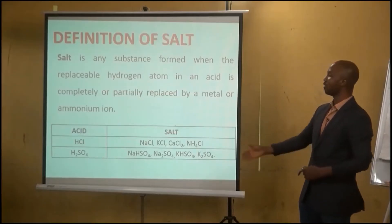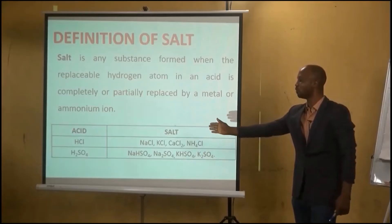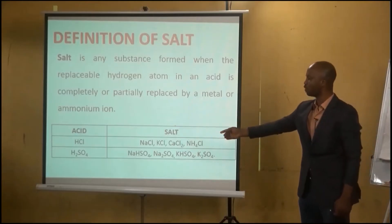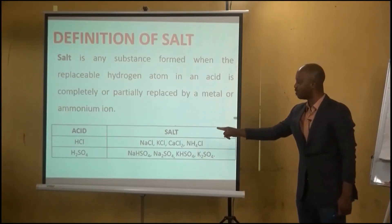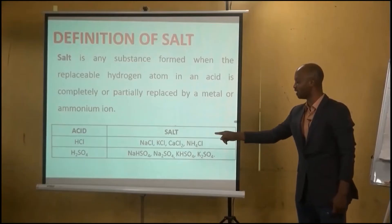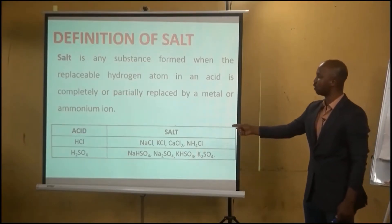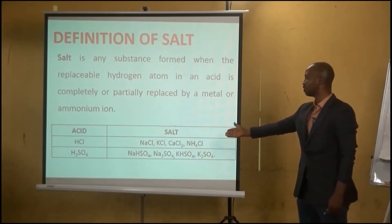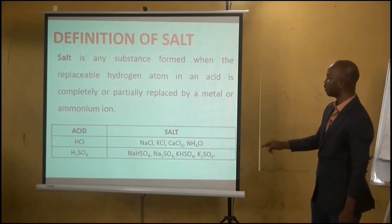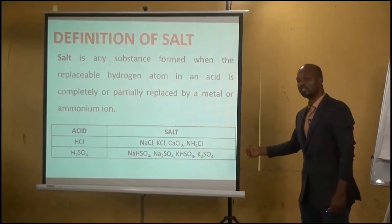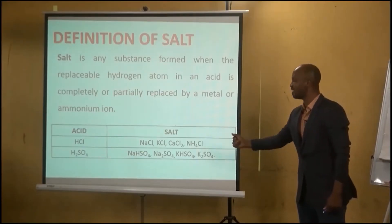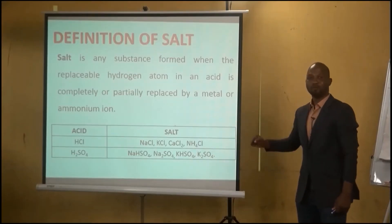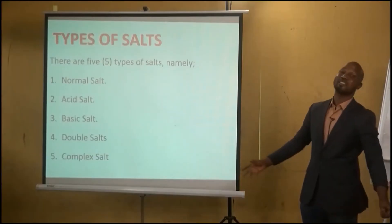Another example is tetraoxosulfate(VI) acid, which has two hydrogen atoms. When you replace one of them with sodium, you get sodium hydrogen tetraoxosulfate(VI). When you replace both with sodium, you get sodium tetraoxosulfate(VI). Similarly, you can form potassium hydrogen tetraoxosulfate(VI) or potassium tetraoxosulfate(VI), demonstrating partial or complete replacement of hydrogen ions.